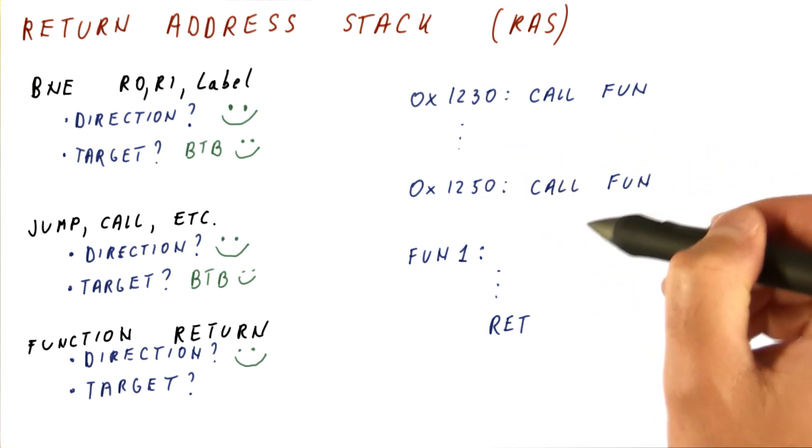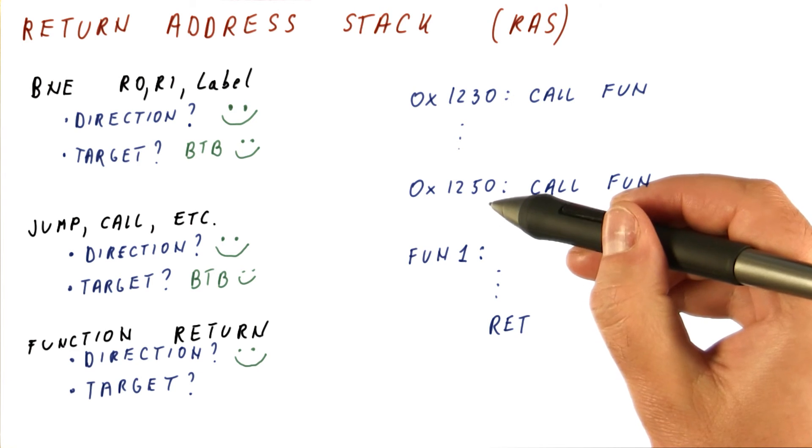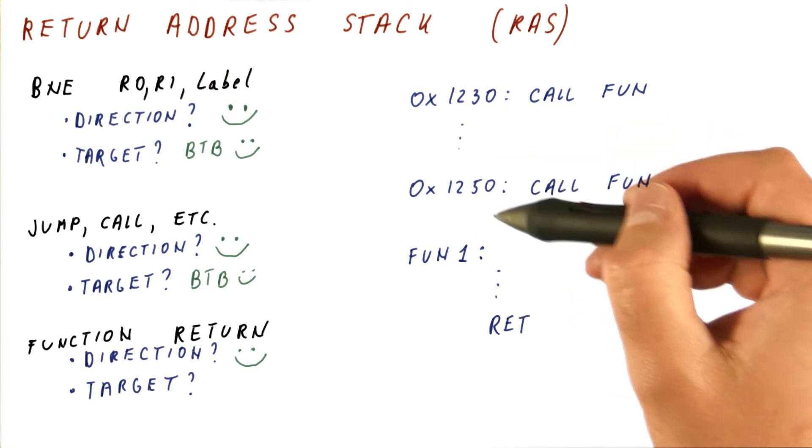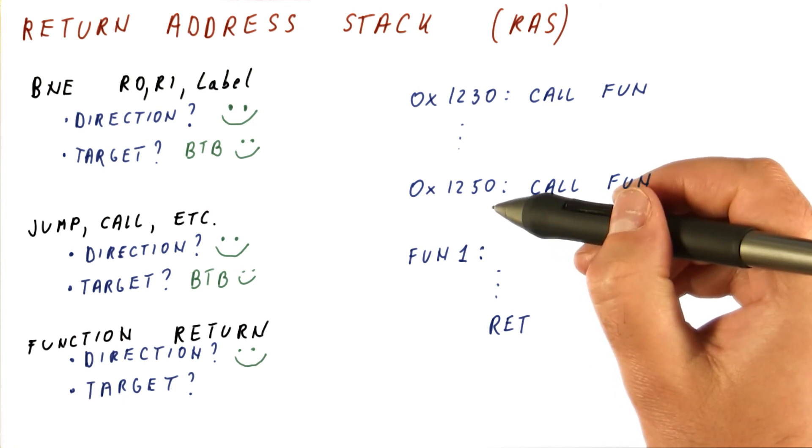Then we reach this point, call again, return. We should be returning here, but the BTB is predicting this. So we have a misprediction. The BTB now will learn that this is the correct target.